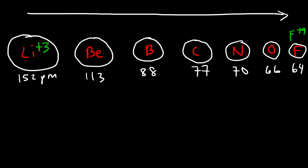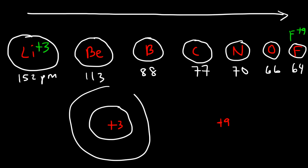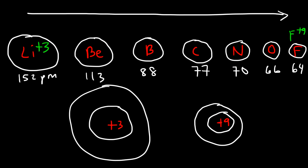Let's draw lithium and fluorine. Lithium has a nuclear charge of +3 and fluorine has a charge of +9 in its nucleus. Lithium has a first shell and a second shell, as does fluorine. In the first shell, both atoms contain two electrons. Lithium has one valence electron and fluorine has seven. The valence electron in lithium is shielded by two core electrons, so it feels an effective nuclear charge of +1 — you take 3 and subtract the two core electrons. Those core electrons repel the valence electron and shield it from the nucleus.